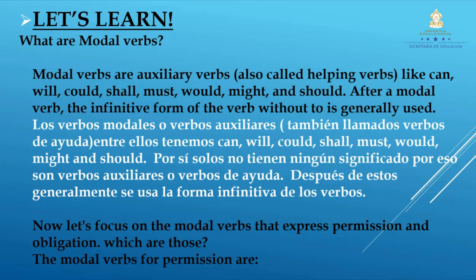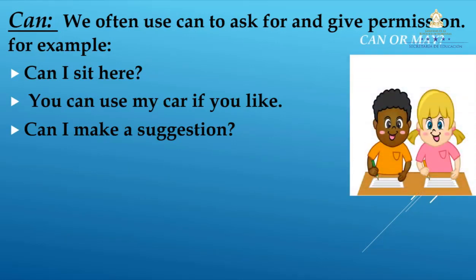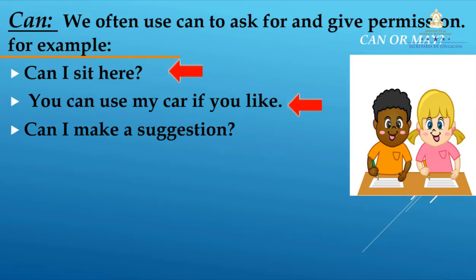Now let's focus on the modal verbs that express permission. Ahora concentrémonos en los verbos modales para expresar permiso. Number one: can. We often use 'can' to ask for and give permission. Utilizamos frecuentemente 'can' para pedir y otorgar permiso en situaciones informales, por ejemplo, con nuestros familiares, amigos o compañeros de escuela. For example: Can I sit here? ¿Puedo sentarme aquí? You can use my car if you like. Puedes usar mi carro si tú quieres. Estos dos fueron ejemplos de cómo podemos usar 'can' en situaciones informales.